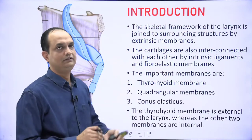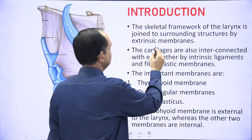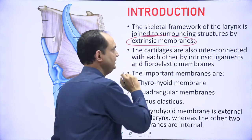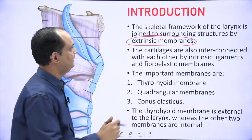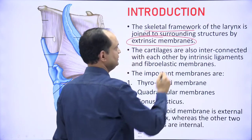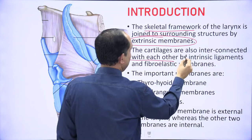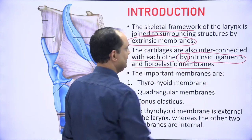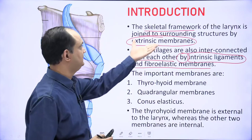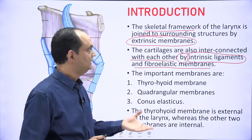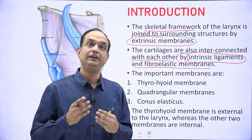The skeletal framework of the larynx is joined to surrounding structures by extrinsic membranes. There are two types of membrane: one is the extrinsic membrane and another is the intrinsic membrane. Extrinsic membranes connect the skeletal framework of the larynx to surrounding structures. The cartilages are also interconnected to each other by intrinsic ligaments and fibroelastic membranes. So one set of membranes connects the larynx with surrounding structures, while the cartilages are interconnected by intrinsic membranes.